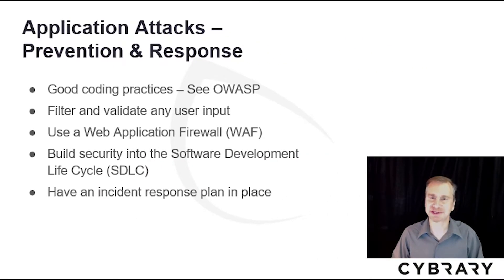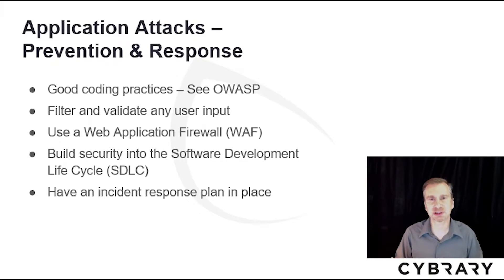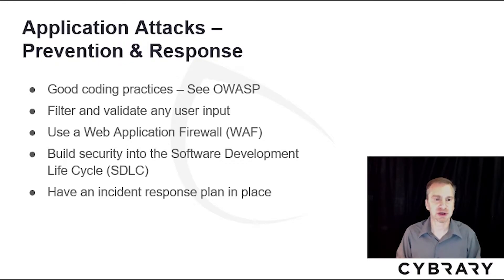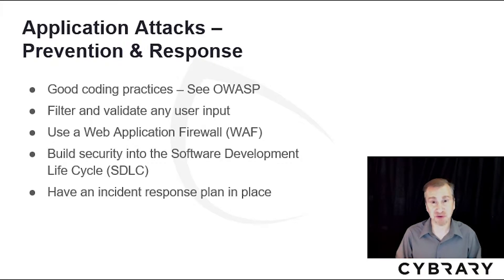To protect against application attacks, first follow good coding practices — you can go to OWASP for their directions, and work with your application development team. Filter and validate any input; anything from an untrusted source such as the internet should be filtered and validated — basically, don't trust input. Use a web application firewall (WAF), a specific device that scrubs for unwanted data based on heuristics, anomalies, or signatures. Also build security into the software development lifecycle, and have an incident response plan in place.